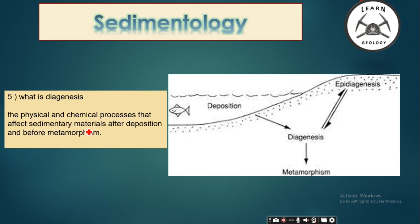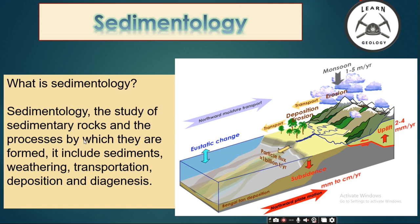The last part of the sedimentology process is diagenesis. The physical and chemical processes that affect sedimentary material after deposition and before metamorphism are called diagenesis. For example, clay will be converted into shale and then slate. This whole process is called diagenesis.